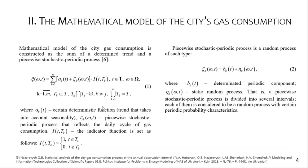A mathematical model of the city gas consumption is constructed as a sum of a deterministic trend and piecewise stochastic periodic processes (expression 1). The model separates the data into a deterministic function and piecewise stochastic periodic processes.